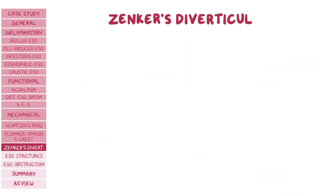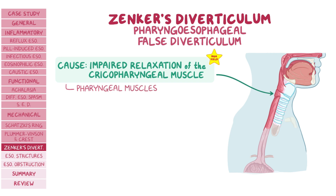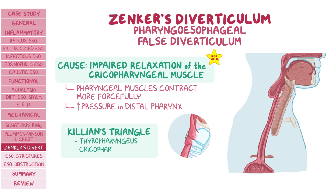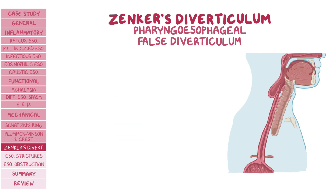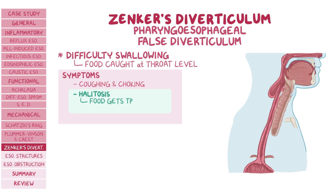The next one is Zenker's diverticulum, also known as pharyngoesophageal false diverticulum. The underlying cause is impaired relaxation of the cricopharyngeal muscle. As a result, pharyngeal muscles contract more forcefully to propel food to the esophagus, increasing pressure within the distal pharynx. This leads to herniation of the mucosa and submucosa through an area with muscle weakness, forming a pouch-like structure outside the lumen of the esophagus. The most common location is at Killian's triangle, between the thyropharyngeus and cricopharyngeus muscles. Symptoms include difficulty swallowing with food stuck at the throat level, coughing, choking, and halitosis or bad breath when food gets trapped in the diverticulum and rots.